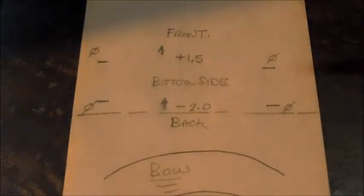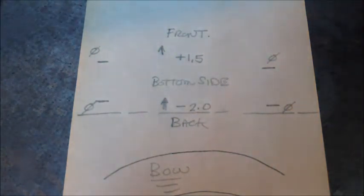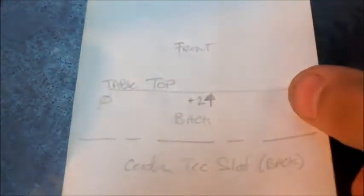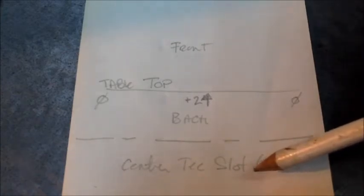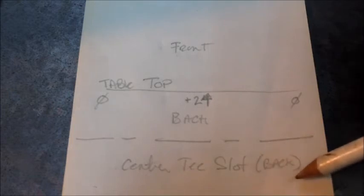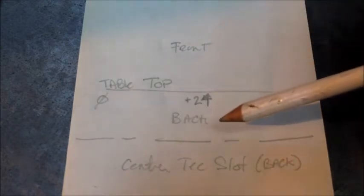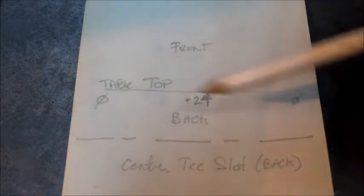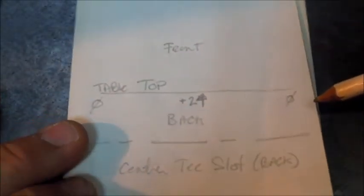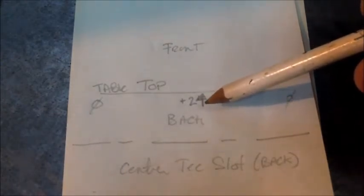And then the other thing I checked was the center T-slot. The front of the table facing the camera. And from one side to the other lengthwise on the table, zero-zero. And the same thing, that plus two thou in the center.